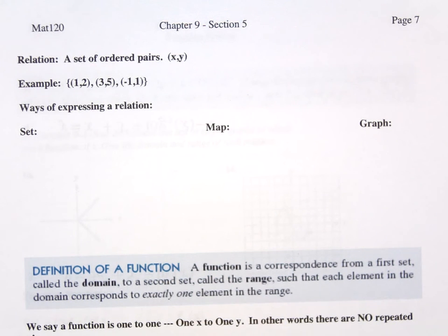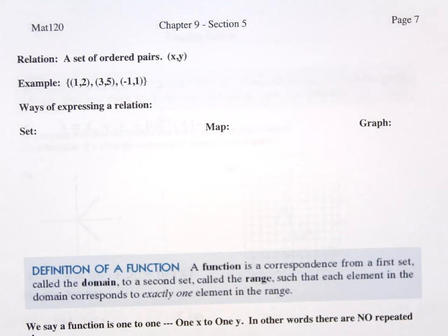A relation is just a set of ordered pairs. It could be anything. It doesn't have any stipulations at all, except it's just an ordered pair, X comma Y. You could call it A comma B. We normally do X and Y because that's how we graph it on an X and Y axis.